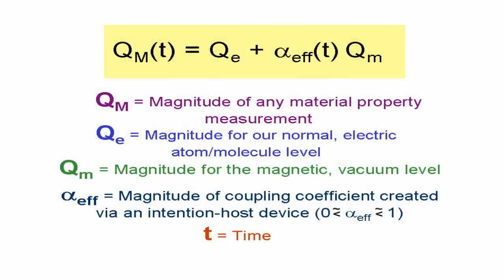Q sub m as a function of time is equal to Q sub e, the value for the normal uncoupled state, the electric atom molecule state, plus alpha effective Q sub m.